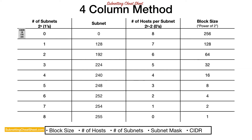Even if your mind goes blank and you don't know where to get started, you will be able to create this chart. You start from zero, just number it down in column one — zero through eight. Then go to column three and write zero through eight. Fill out column four by starting at one and doubling it all the way up to the top. Finally, fill out the subnetting column starting at zero. With this one chart you can find the block size, number of hosts, number of subnets, subnet mask, CIDR — everything.